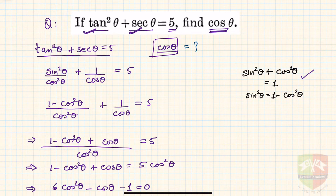Starting from the given equation, I can write tan²θ as sin²θ/cos²θ plus 1/cosθ, and this equals 5. Remember, secθ is 1/cosθ and tanθ is sinθ/cosθ.